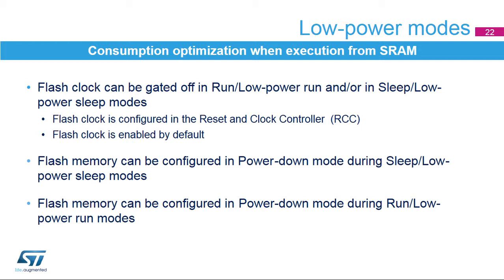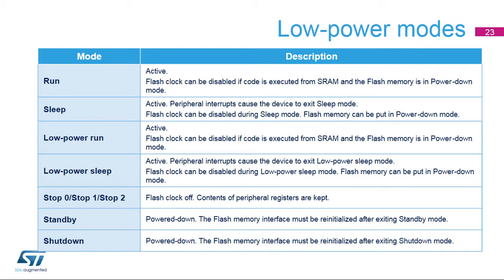The flash memory's consumption can be reduced when the code is not executed from the flash. The flash clock can be gated off in run and low-power run modes, and also configured to be gated off in sleep and low-power sleep modes. The flash clock is configured in the reset and clock controller and is enabled by default. The flash memory can be configured in power-down mode during sleep and low-power sleep modes. It can also be configured in power-down mode during run and low-power run modes when the code is executed from SRAM. Gating the clock and putting the flash memory in power-down mode significantly reduces power consumption.